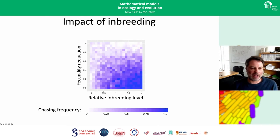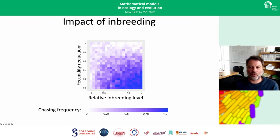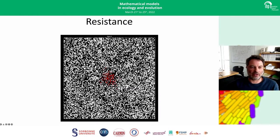We also looked at how inbreeding affects chasing frequency. We set up a model facilitating inbreeding and tuned the fitness effect, where one means inbreeding doesn't reduce fitness and zero means very strongly reduced fitness in inbred individuals. Chasing is highest in areas with high inbreeding level combined with a large fecundity cost due to inbreeding — again this makes intuitive sense.